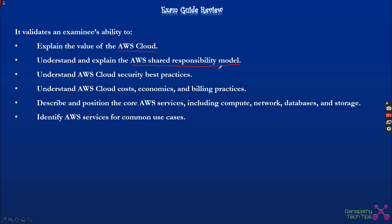Second is understanding and explaining the AWS shared responsibility model — a model defining responsibility of the cloud versus responsibility in the cloud, i.e., who is responsible for what. Third is understanding cloud security best practices: how to securely create applications and VPCs, how to store secrets, and what AWS services deal with cloud security.